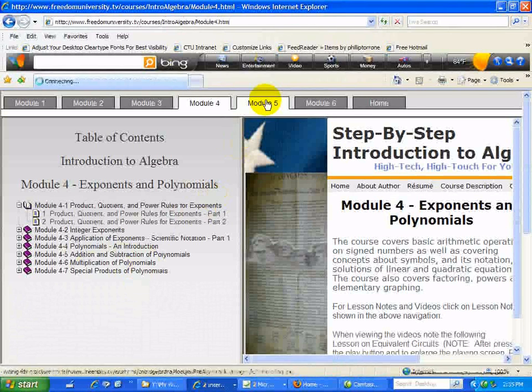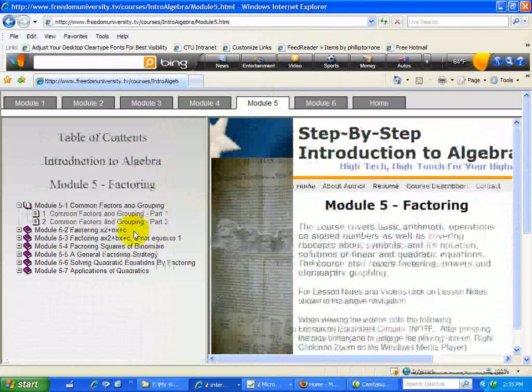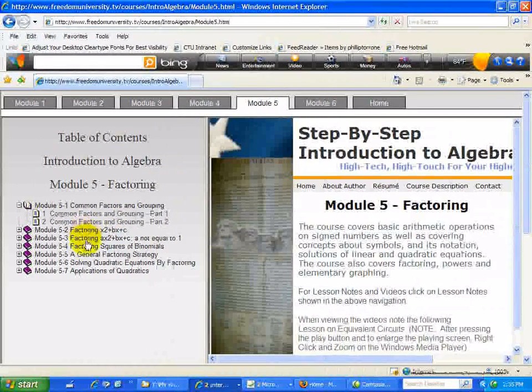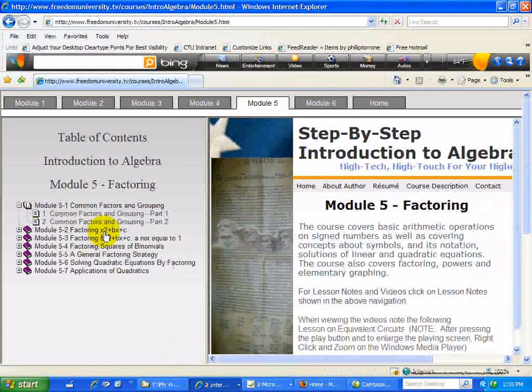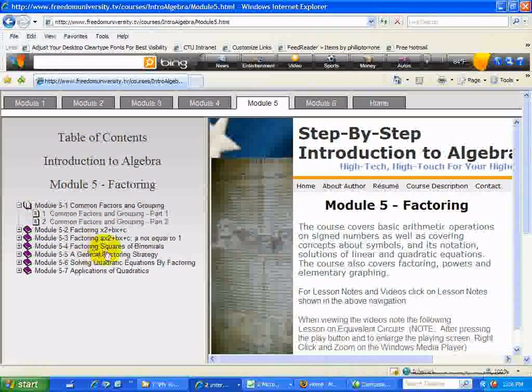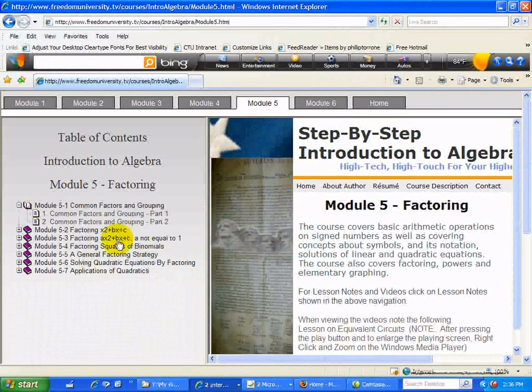Module 5 deals with factoring, where we find common factors and introduce that concept. Then we find and factor quadratic equations, one where the leading coefficient of the x-squared term is either equal to 1 or doesn't. Here x is one where a equals 1, which is equal to x-squared plus bx plus c. Then we factor squares of polynomials, and then we have a general factoring strategy. Then we solve quadratic equations by factoring, like these equations where we set them equal to 0, and then we see some of the applications associated with quadratics.